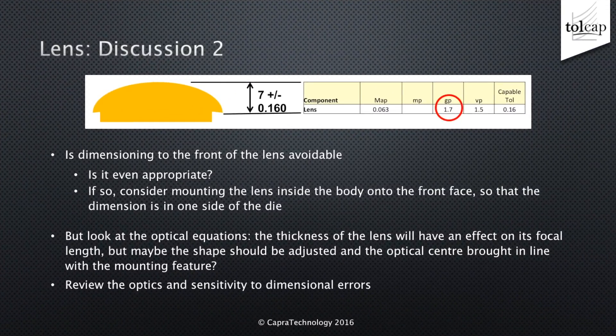Is dimensioning to the front of the lens avoidable? Is it even appropriate? If it's necessary, consider mounting the lens inside the body onto the front face so that the dimension is on one side of the die. But look at the optical equations — the thickness of the lens will have an effect on its focal length. Maybe the shape should be adjusted so the lens is convex on both faces. Maybe the optical centre could be brought in line with the mounting feature. Maybe rather than include the lens in the stack, it's better to review the optics and their sensitivity to dimensional variation.